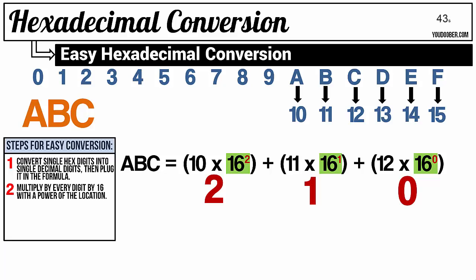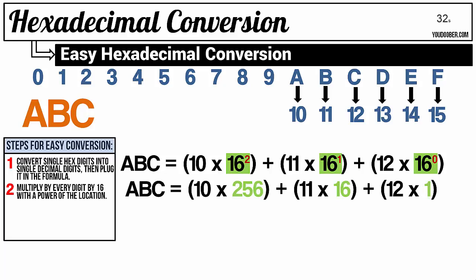10 times 16 squared, 11 times 16 to the 1, and 12 times 16 to the 0. Then we just multiply those exponents out, and this is what we get.